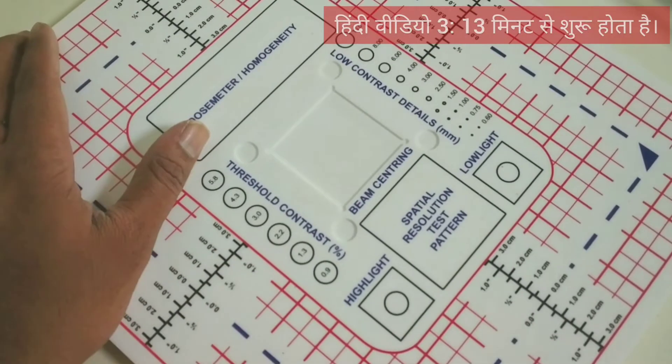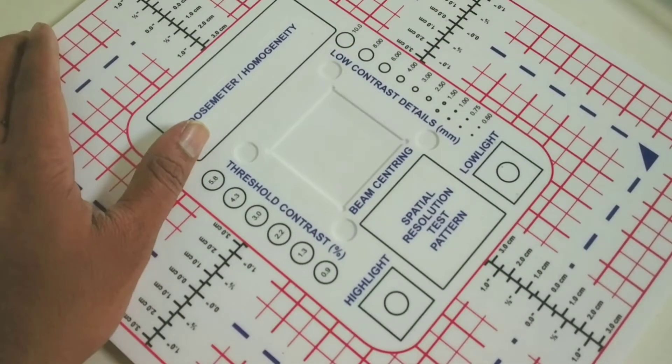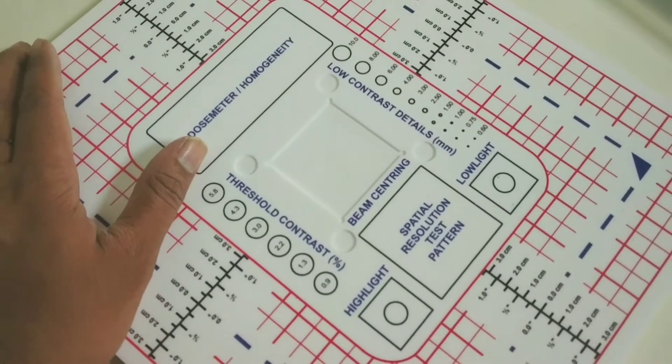With this, we can know the dose meter, homogeneity, threshold contrast, beam centering, spatial resolution pattern, highlights, low lights, and low contrast details of the X-ray machine.